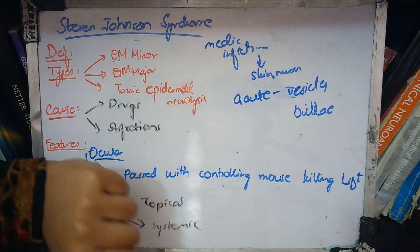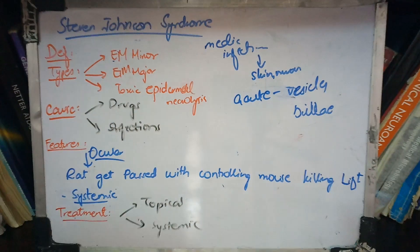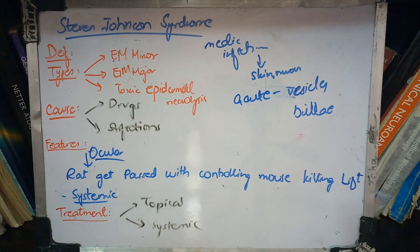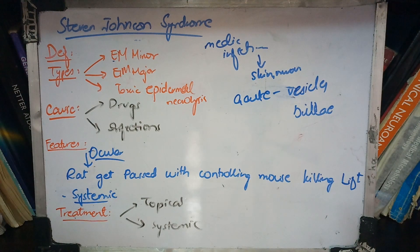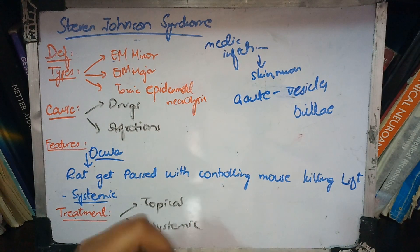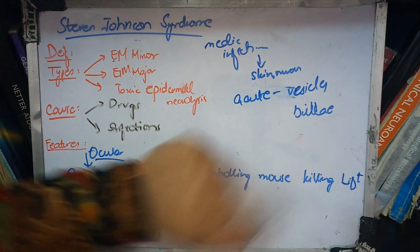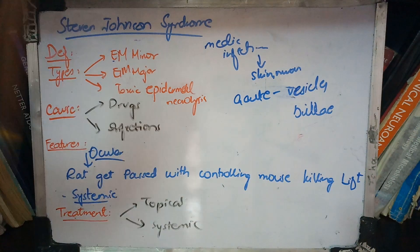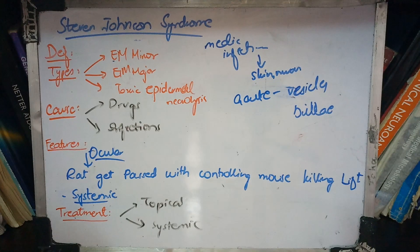Vesicles and bullae are types of skin eruptions. When the epithelium is raised with fluid underneath, we call them vesicles. Larger fluid-filled formations are called bullae.